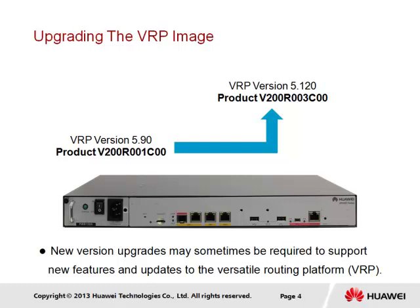The V-value product version represents the product code and is generally fixed. Where a major version release occurs, however, we will see the product version update, referenced by the R value, while a new minor update of the current version will be referenced by the C value. The example shown here gives a true reference to an upgrade from VRP version 5.9 to version 5.120 and the respective product codes for each version upgrade.